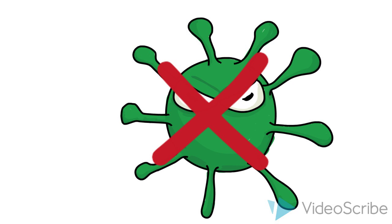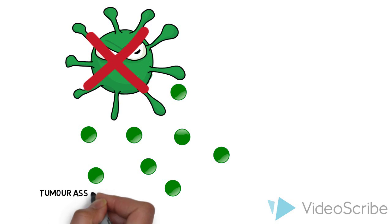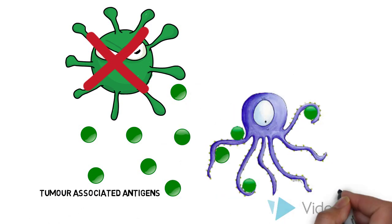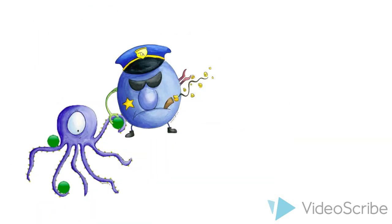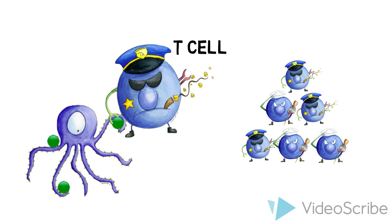Apoptotic tumor cells release tumor-associated antigens that cause the release of dangerous cytokines, such as interferon alpha and heat shock proteins. These cause the activation and maturation of dendritic cells, which pick up tumor-associated antigens and present them to CD8 and CD4 T cells, activating CD8 T cells and causing destruction of tumor clones to ensure the host remains tumor-free.